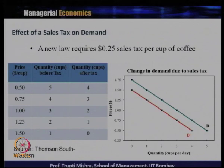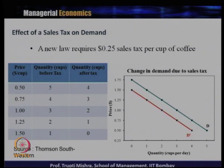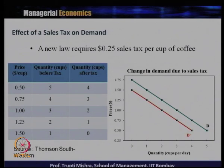Suppose a new law requires a $0.25 sales tax per cup of coffee. If you look at the demand schedule, when the price is changing from $0.50 to $0.75 to $1.00, there is a difference in the quantity before tax and after tax, and that leads to a shift in the demand curve from D to D-dash. So the effect of sales tax reduces the demand.